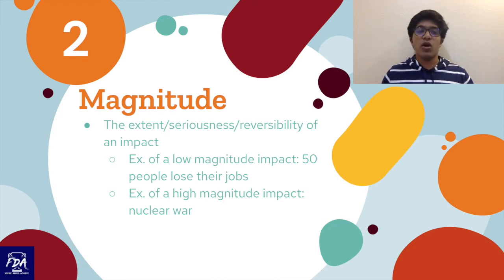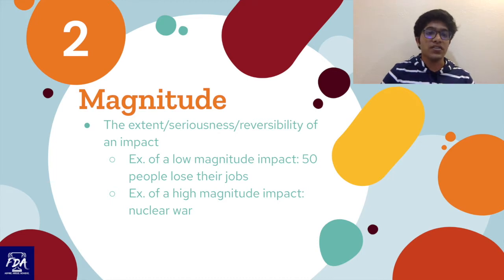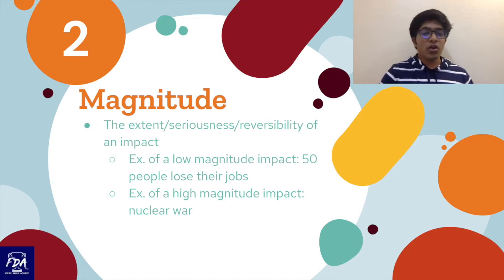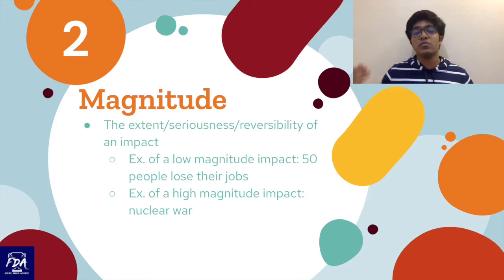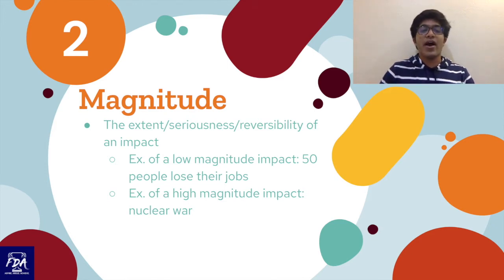Take something like global warming. It's really unlikely that once global warming happens, we'll be able to reverse back to conditions we have right now, which means global warming not only affects every single person today but could affect every single person going forward for the entirety of time. So reversibility is a huge part of magnitude. You can also tie this into the poverty cycle, talking about how it's almost impossible to reverse poverty once it's happened to someone.